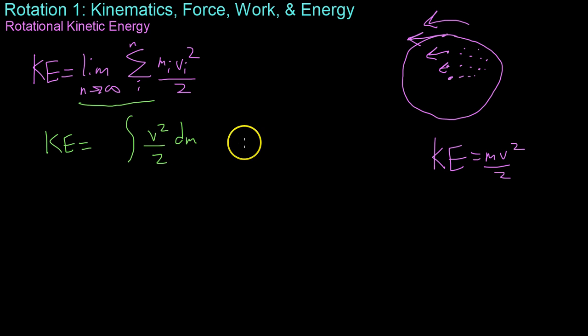So we know that the kinetic energy then is the integral of v squared over 2 times the individual little particles of mass. Now we know from our last video that v equals omega times r, which is just omega equals v over r, rearranged. So we can substitute this in and get that kinetic energy equals, we'll bring omega out because it's a constant in this case. We're not accelerating the system at all. Equals omega squared times the integral of r squared over 2, r squared dm.